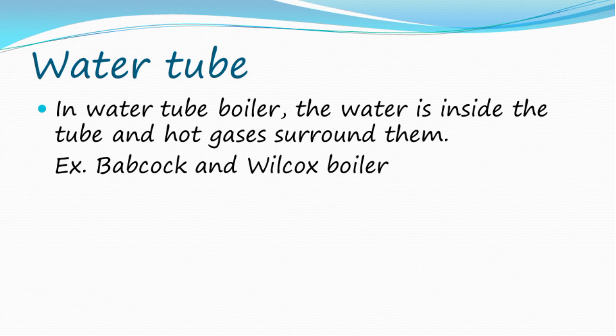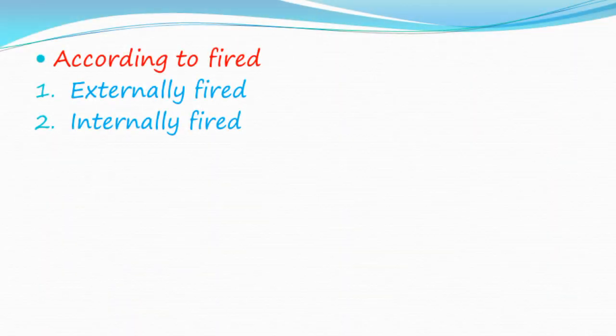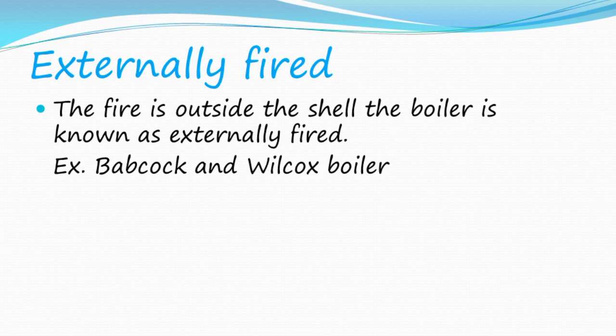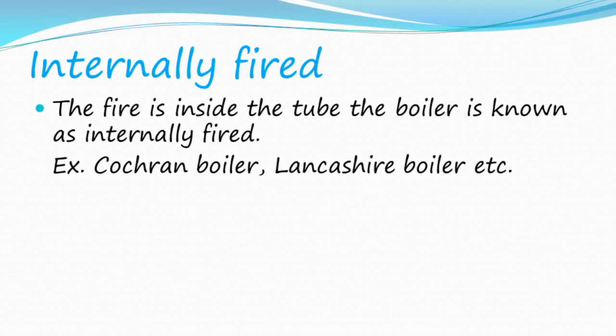In a water tube boiler, the water is inside the tube and hot gases surround them. Example: Babcock and Wilcox boiler. Classification according to firing: externally fired and internally fired. In externally fired boilers, the fire is outside the shell — example: Babcock and Wilcox boiler. In internally fired boilers, the fire is inside the tube — examples: Cochrane boiler, Lancashire boiler, etc.